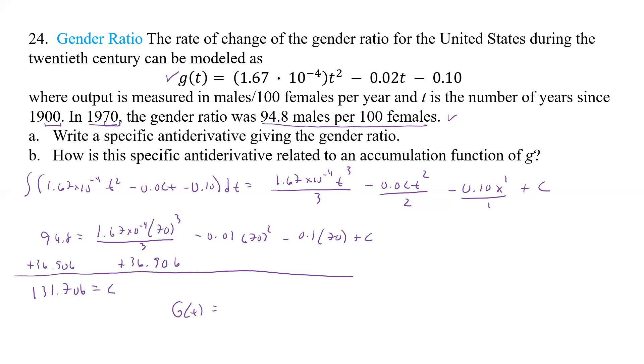Now, 1.67 times 10 to the negative 4 divided by 3, that gives me 5.567 times 10 to the negative 5 t to the third. And we already did that one.